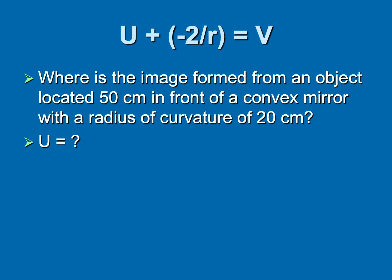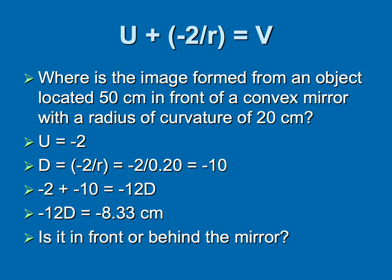Because the reflecting power of a mirror is measured in diopters, we can drop one of these things into u plus d equal v, and now start talking about where those images are going to be located. Where is the image formed from an object located 50 centimeters in front of a convex mirror with a radius of curvature of 20 centimeters? You know from your optical powers that radius of curvature must be in meters.